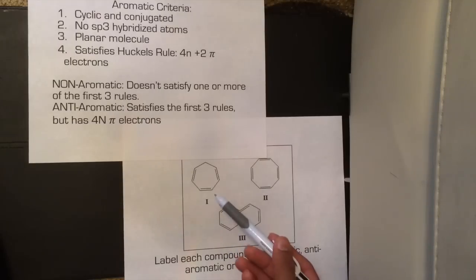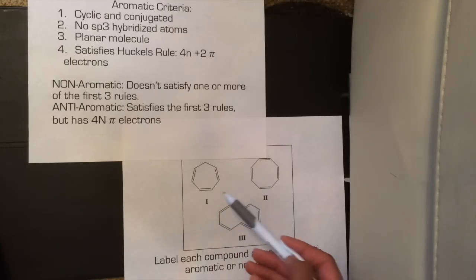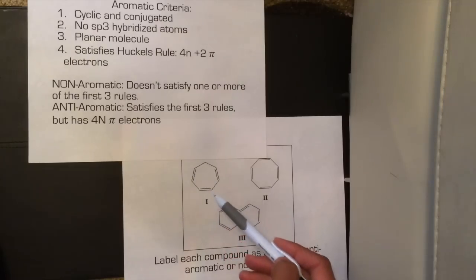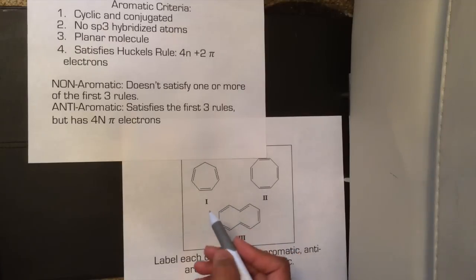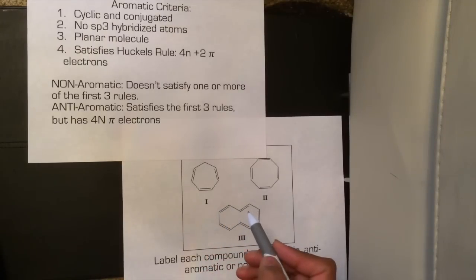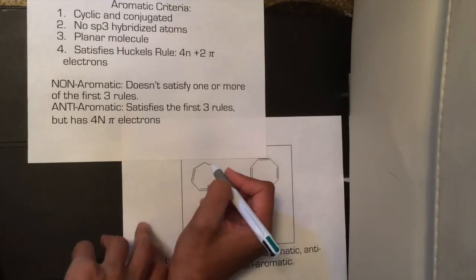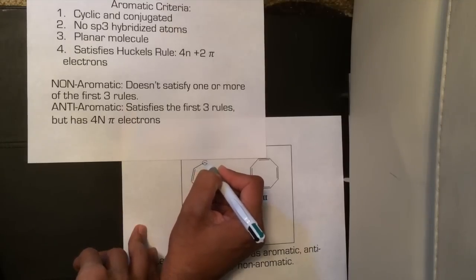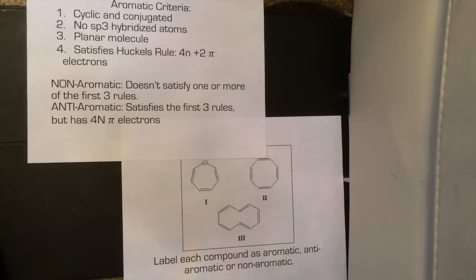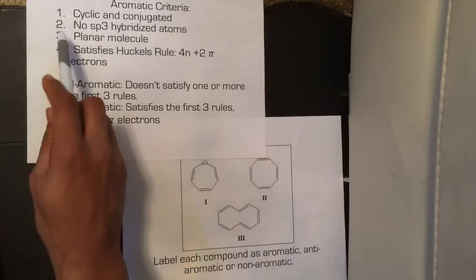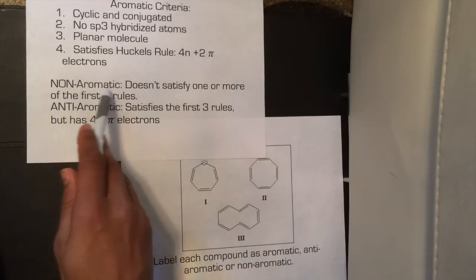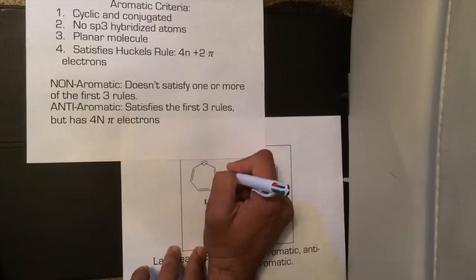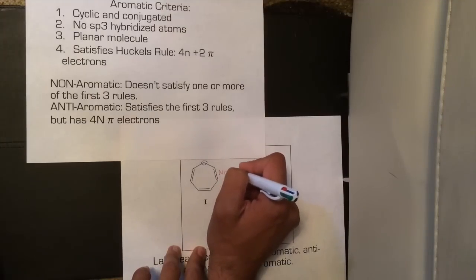Looking at our first compound, we can see that it's completely cyclical. But the first thing we notice is whether it's completely conjugated. We can see that the carbon on the top is actually an sp3 hybridized atom. So we can automatically knock out rule number 2, which means that it is non-aromatic. This first compound is non-aromatic.